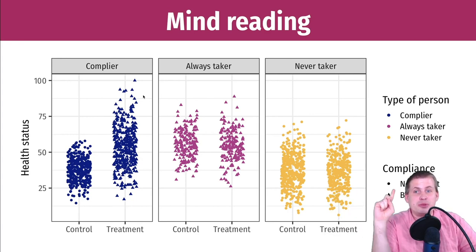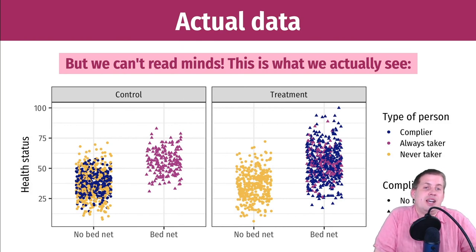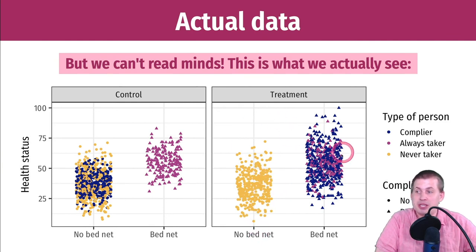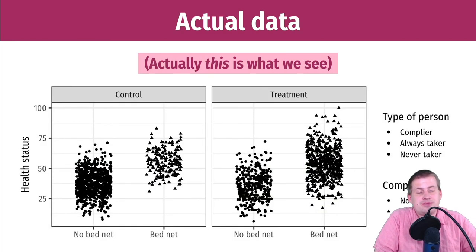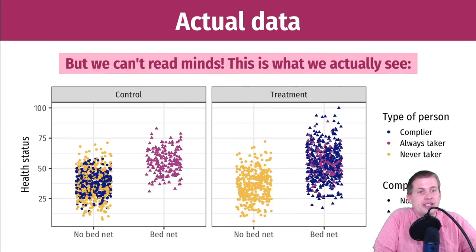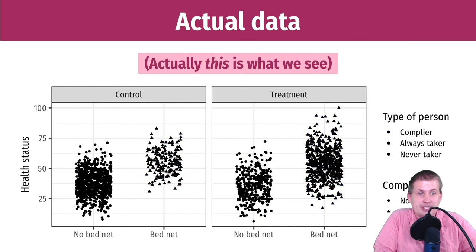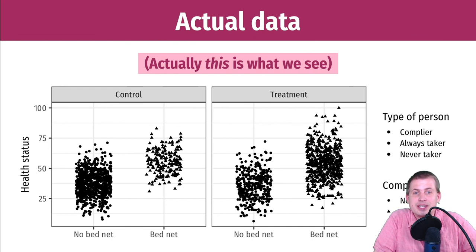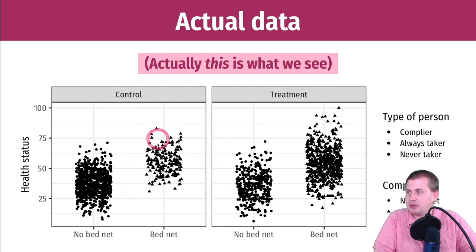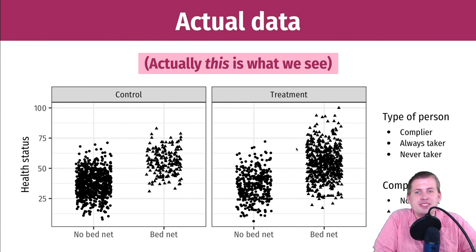The issue is we can't read people's minds. In reality, we just see a control group and a treatment group with people mixed together — some used the bed net, some didn't. Without distinguishing compliance types, it doesn't look like the treatment did much, because there were people who used the bed net in the control group, and that's messing up the results.